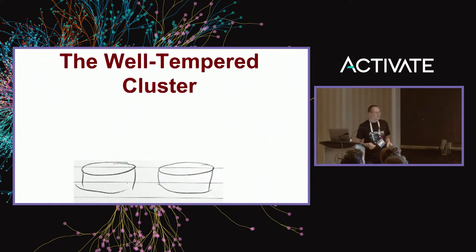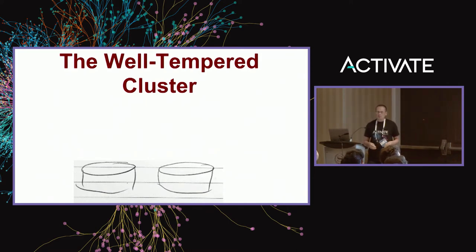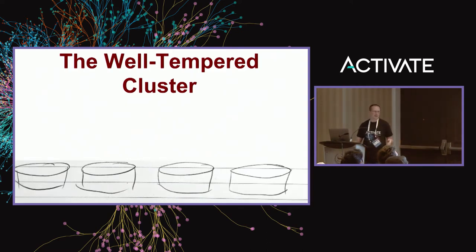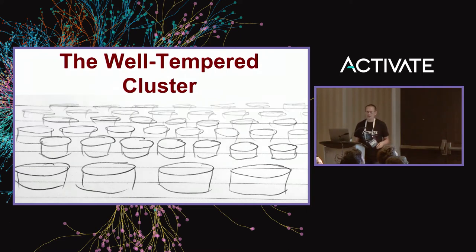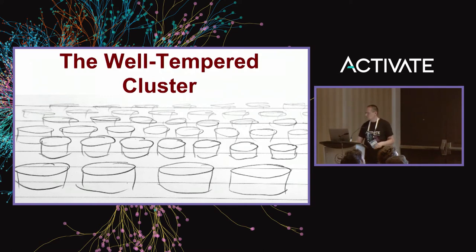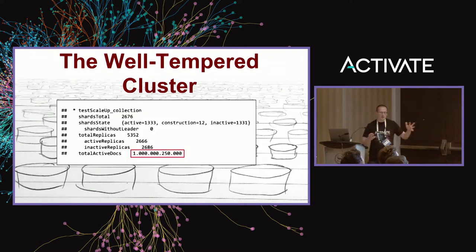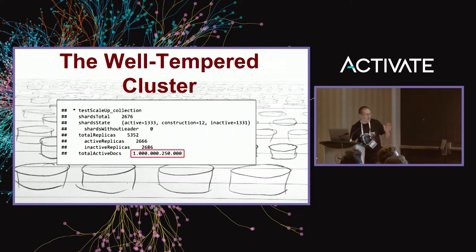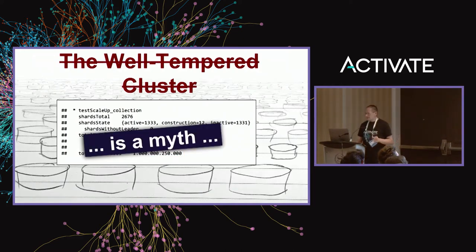We have this dream of what I call the well-tempered cluster. We start small — maybe two, three, or five nodes — and as we keep adding more and more data, we keep adding nodes and replicas, and our autoscaling framework allocates these replicas, and everything works pretty fine. At some point in the bright future, we reach this magic number of one trillion documents. This, of course, is a myth — because the reality is much more complicated, and autoscaling can solve only part of these problems. There are inherent limitations, things it simply cannot do.